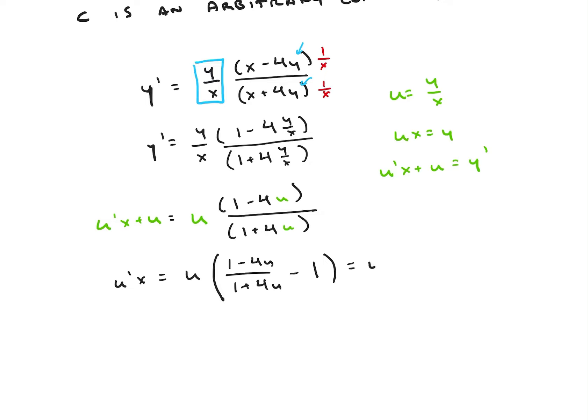And then I can rewrite that as u times 1 minus 4u over 1 plus 4u minus 1 plus 4u over 1 plus 4u. And I can do a little bit of algebra to see that u prime x is going to be equal to u times—those 1's are going to cancel—I'm going to be left with negative 8u squared over 1 plus 4u.